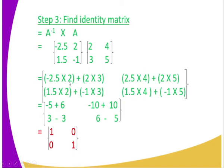Applying the row-column rule: −2.5 × 2 = −5, and 2 × 3 = 6. Then −2.5 × 4 = −10, and 2 × 5 = 10. For the second row: 1.5 × 2 = 3, and −1 × 3 = −3.